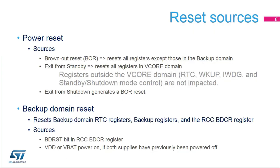The second type of reset is the power reset. The brownout reset, or BOR, resets all registers except those in the backup domain powered by VBAT, which contains the RTC and the external low-speed oscillator. When exiting standby mode, all registers powered by the regulator are reset. When exiting shutdown mode, a brownout reset is generated.